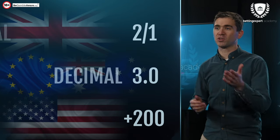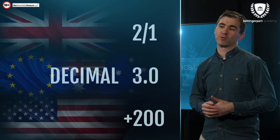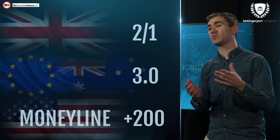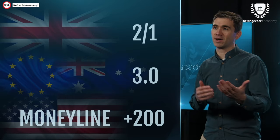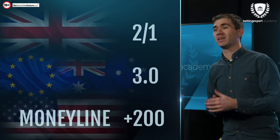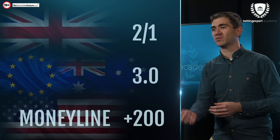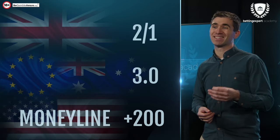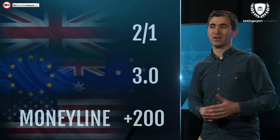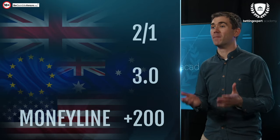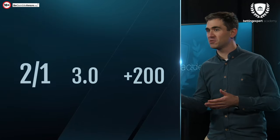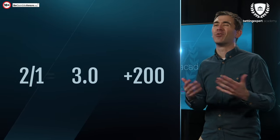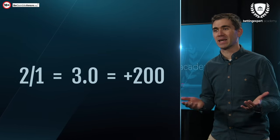Decimal odds show you what your total return would be for a single unit stake. American odds, which will be shown with either a plus or minus, show either the amount you can win if you stake $100 — that's the plus odds — or the amount you need to stake to win $100, which is when the odds are minus. So you could see two to one, 3.0, or plus 200, and they all mean the same thing.